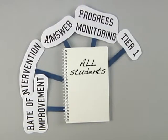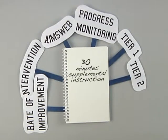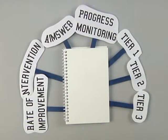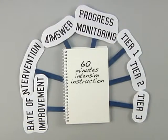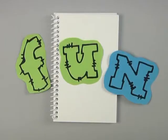Tier one includes all students receiving instruction in reading and math during the core reading and math instructional blocks of time. Tier two includes students needing an additional 30 minutes of intensive instruction on top of core instructional blocks.